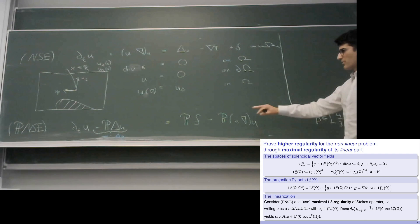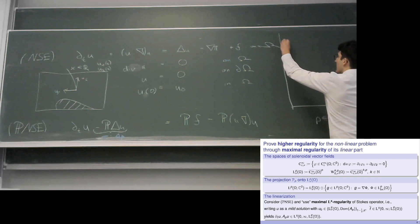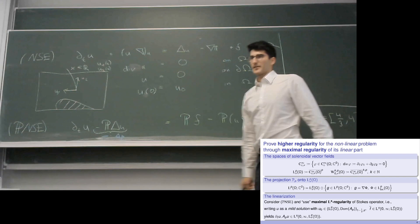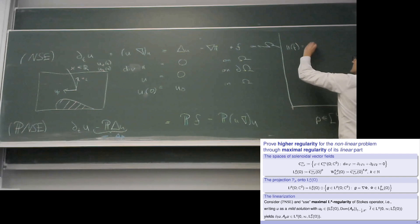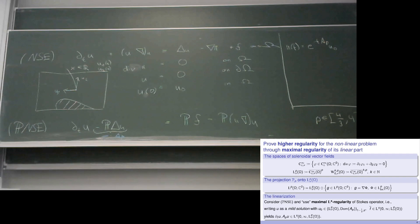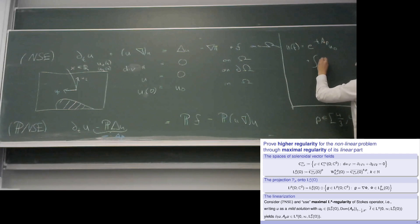Why would maximal regularity be interesting? We would write u as a mild solution: u(t) equals e^{-tA_p} times u₀ — this would be a semigroup — and then use the variation of constants formula on the right-hand side. Then use maximal regularity to conclude that if the right-hand side comes from an Ls space with values in Lp sigma and the initial value u₀ comes from an Lp sigma space with values in the domain of A_p, then also our solution will have the regularity of the input parts.